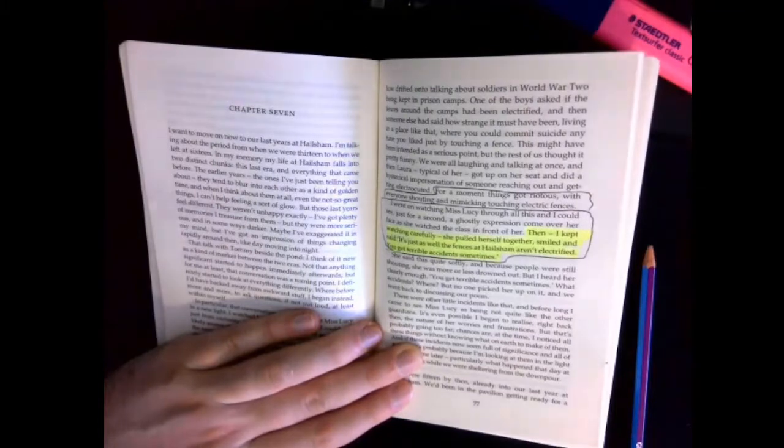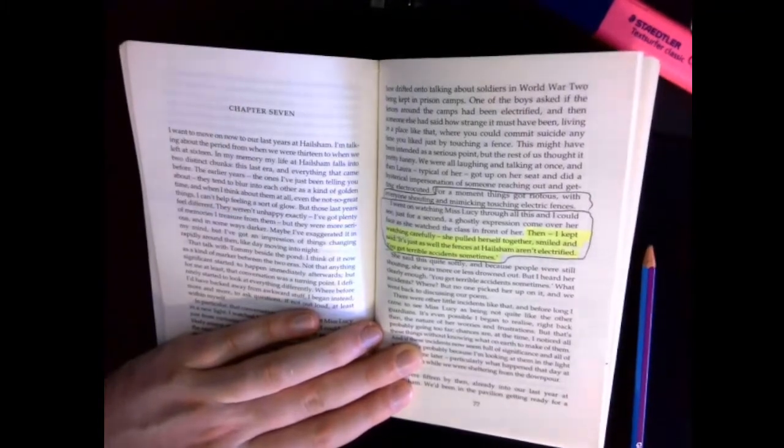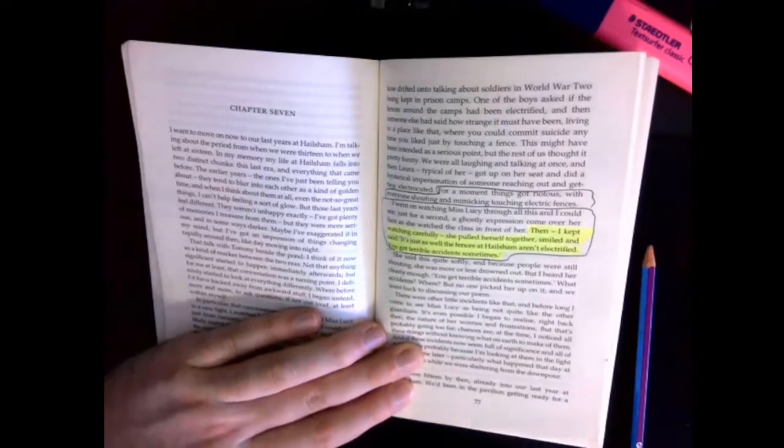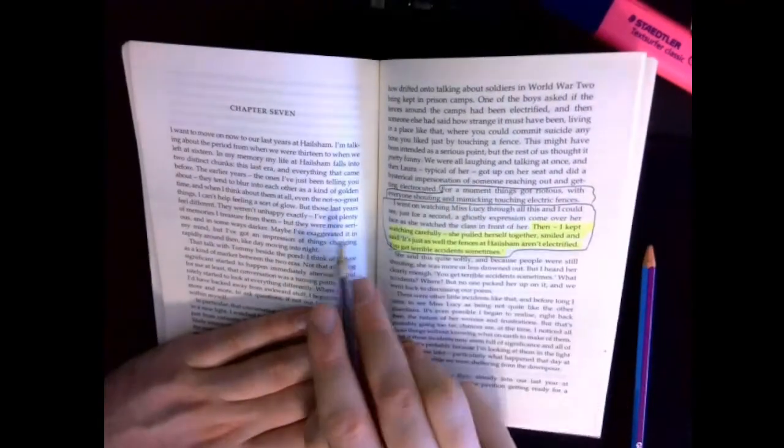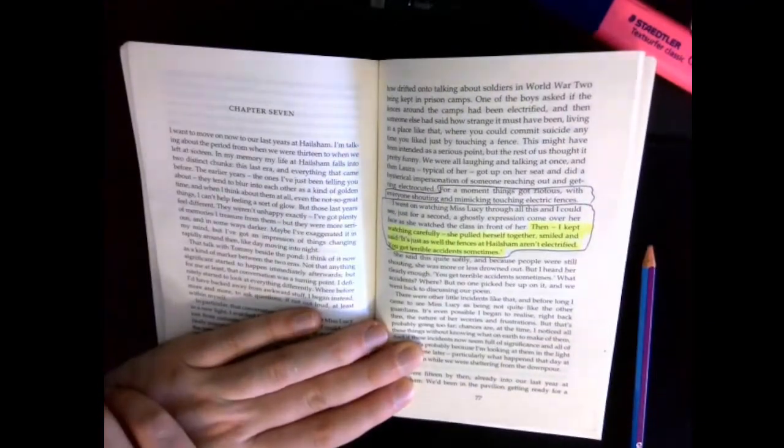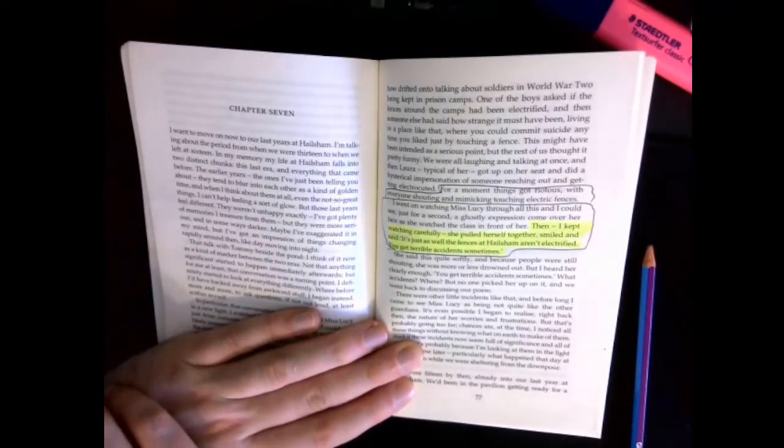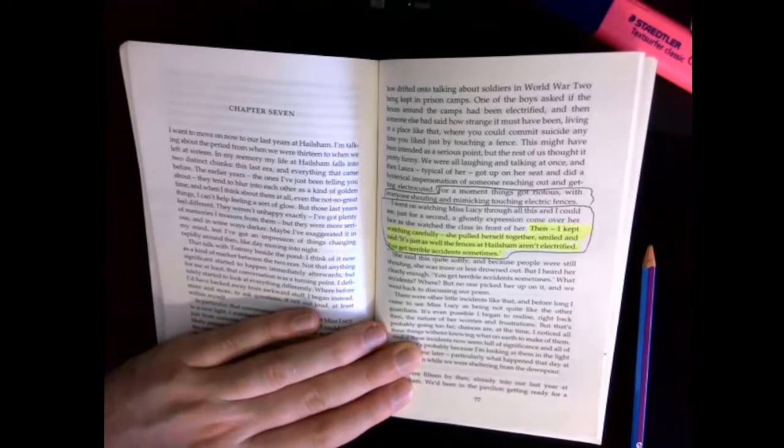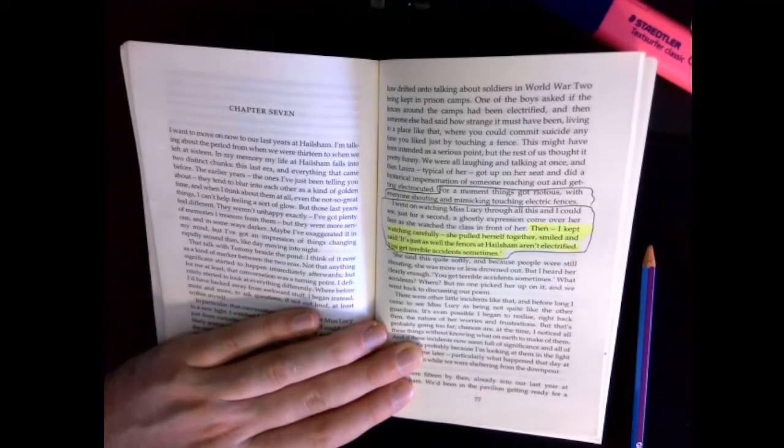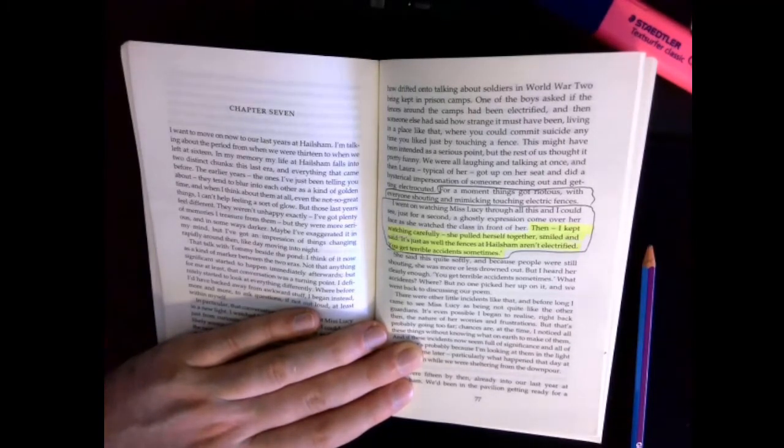So this is the last little example I'll give you, because I'm running up on the 10 minute mark. And this is probably overly long already. Page 77, for a moment things got riotous, with everyone shouting and mimicking touching electric fences. I went on watching Miss Lucy through all this and I could see, just for a second, a ghostly expression come over her face as she watched the class in front of her. Then I kept watching carefully. She pulled herself together, smiled and said, It's just as while the fences at Hailsham aren't electrified, you get terrible accidents sometimes.